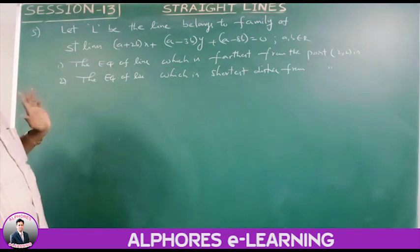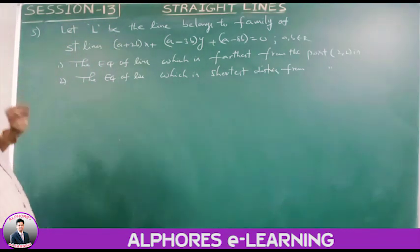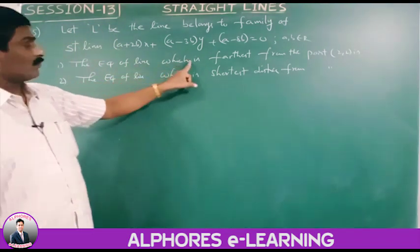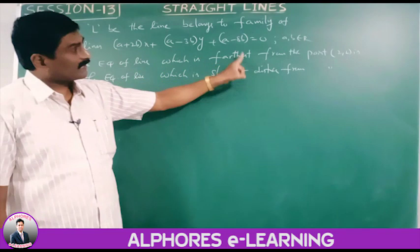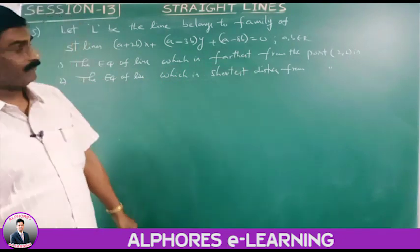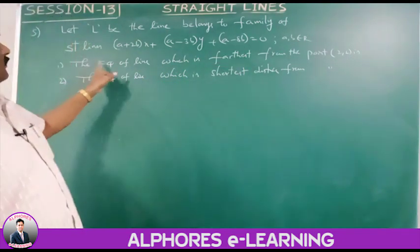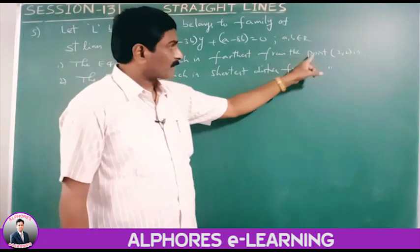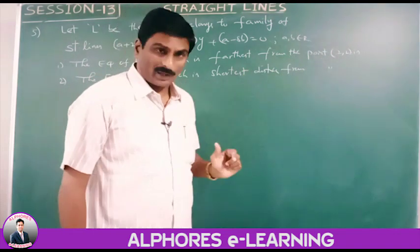Sub-problem 1: find the equation of the line in this family which is farthest from the point P(2, 2). Sub-problem 2: find the equation of the line which has the shortest distance from P(2, 2).